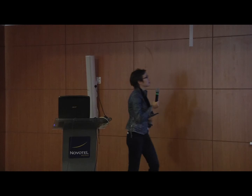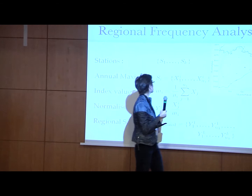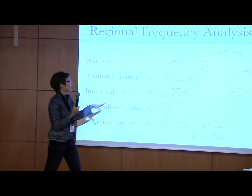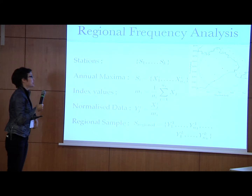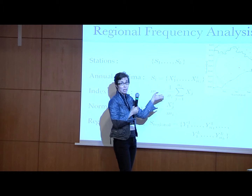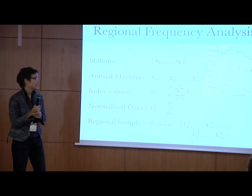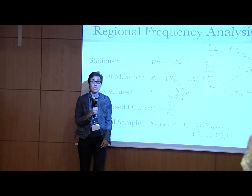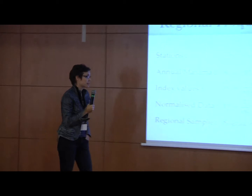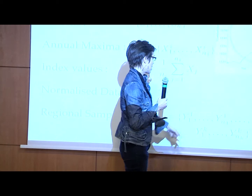For the notation, we have all the stations S1 to SN that are within the neighborhood. The observations are the annual maxima of rainfall — I call them X — so we have a bunch of observations for each station. We compute the index values, which is just the average of the maximum rainfall for each station, so it is MI. And we work on the normalized data, which are the observations normalized by the index value — I call them Y. So now we can build the original sample, which is made of this normalized data for all the stations in my neighborhood.